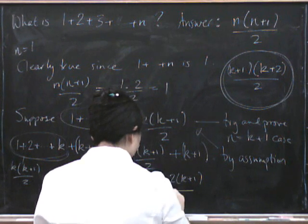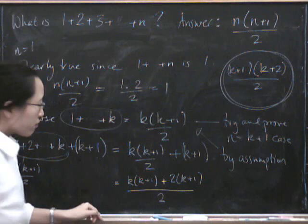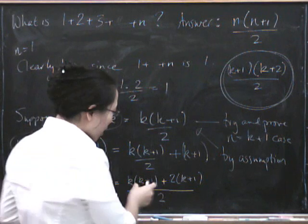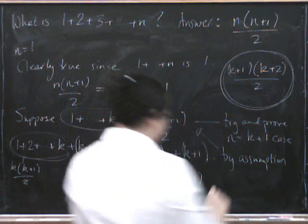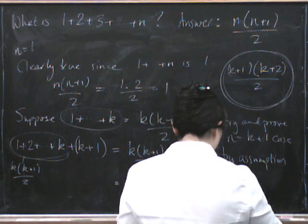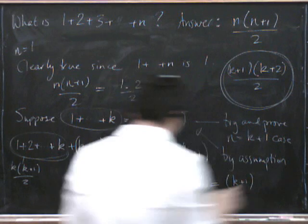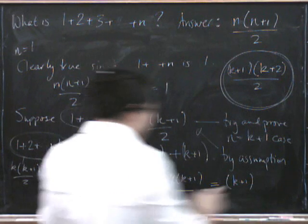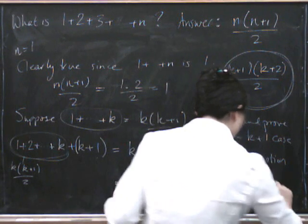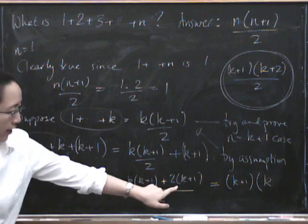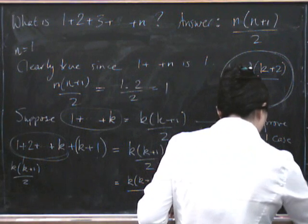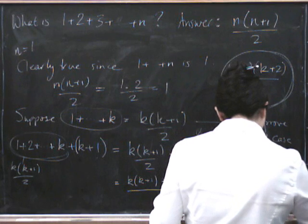Right, now what should I do? Well, I should probably take out this factor of k plus 1. So I get k plus 1, and what do I have that's left? Well, over here I've got k, and over here I've got k plus 1. The whole thing is over 2.